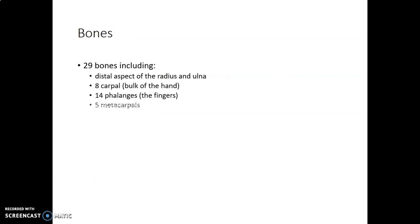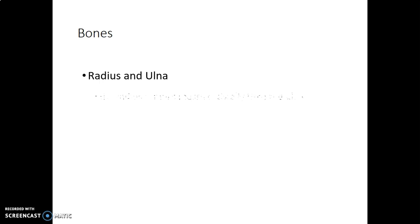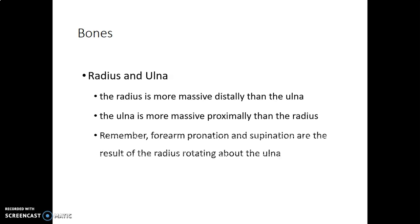We have 29 bones in the hand: the distal aspects of radius and ulna, eight carpal bones which we have already named, 14 phalanges where each finger has three phalanges except the thumb which has two, then five metacarpals. The radius is more massive distally, while the ulna is more massive at the proximal end.